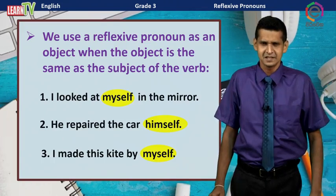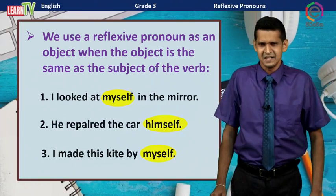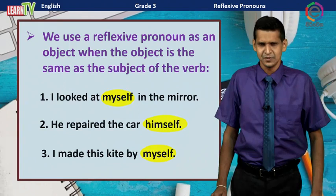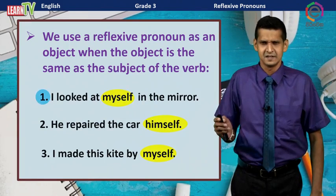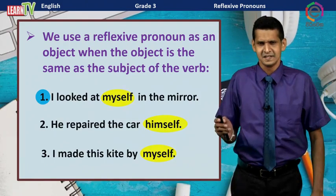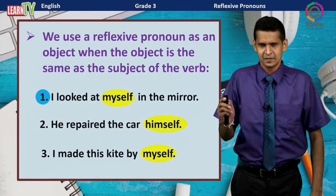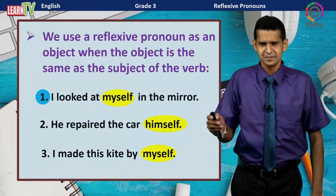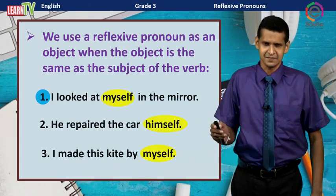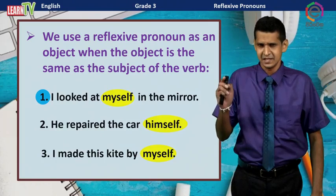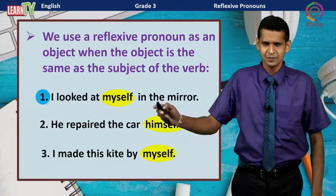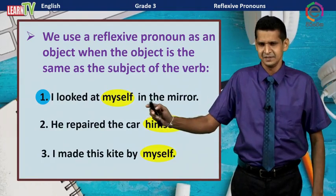What is the subject in this sentence? I is the subject, myself is the object. So the correct answer is subject and object. We cannot say 'I looked at me' — instead we have to use 'I looked at myself in the mirror.'